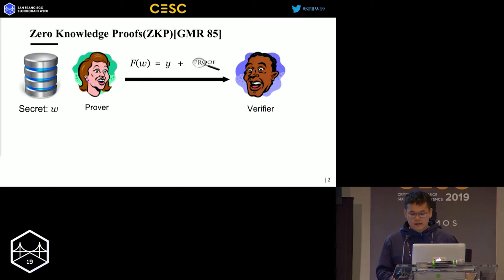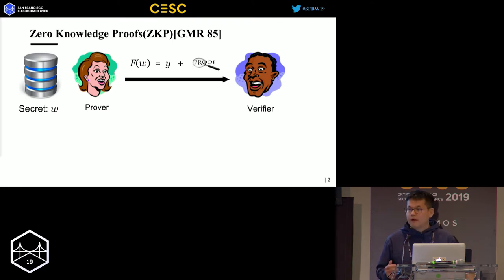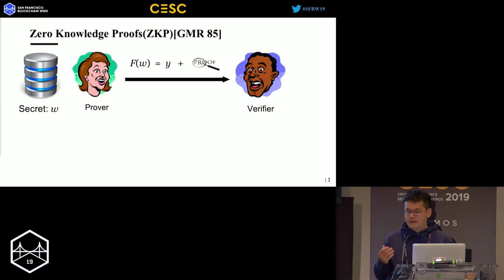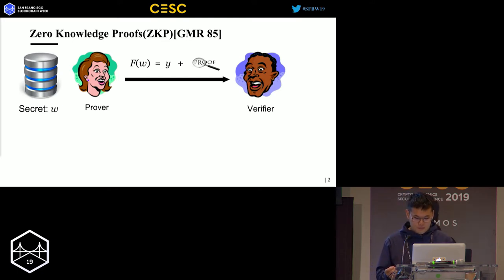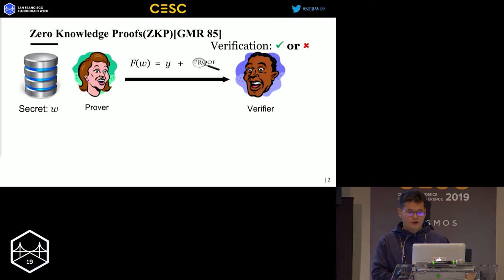So first of all, what's the definition of zero-knowledge proofs? Suppose we have a prover and a verifier, and the prover wants to convince the verifier the computation of some function f given the input w equals to y, without leaking the information of the input w, because this input is the secret information of the prover. After seeing the proof and the output y, the verifier will check the proof and decide to accept or reject.